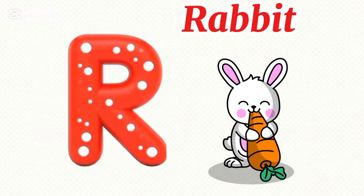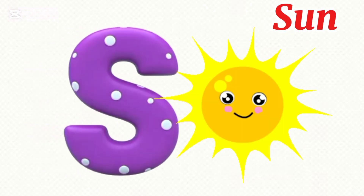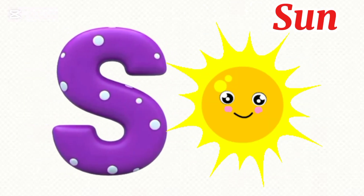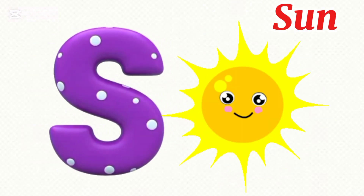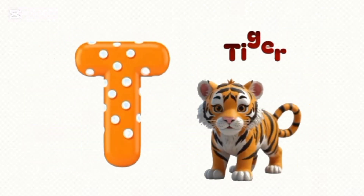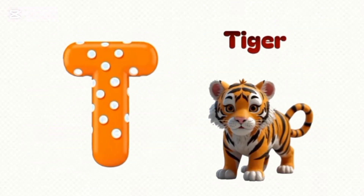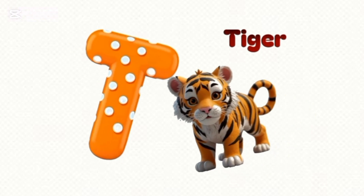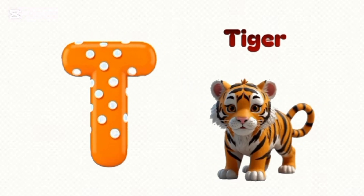R is for rabbit, rabbit, rabbit. S is for sun, sun, sun. T is for tiger, ta-tiga, ta-tiga.